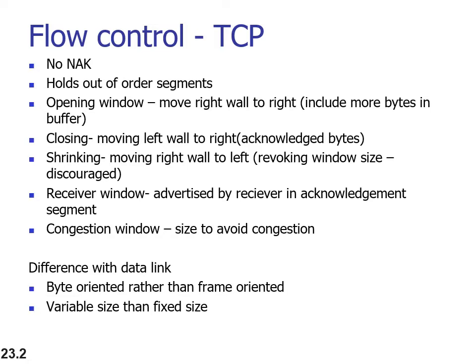Protocols such as selective repeat and go-back-N consider that frame loss or acknowledgement loss is due to collision and ask for retransmission. Whereas in the transport layer, it is assumed that packet loss is because of congestion. The flow control window is dynamically adjusted based on network traffic, which is why flow control is needed in both layers.